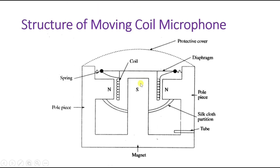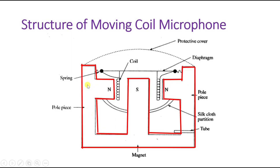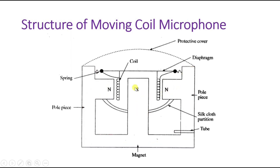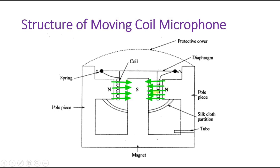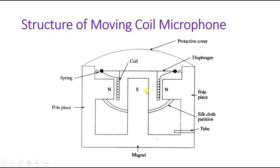Let us see the structure of the moving coil microphone. If you see the structure, there is a magnet with the south pole in the center and two north poles on the sides. The magnetic field emerges from the north pole and gets enclosed at the south pole, so the magnetic field runs in that direction — from north to south — as a constant magnetic field due to this permanent magnet.